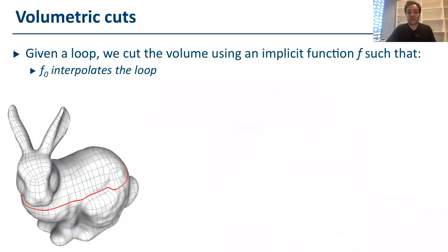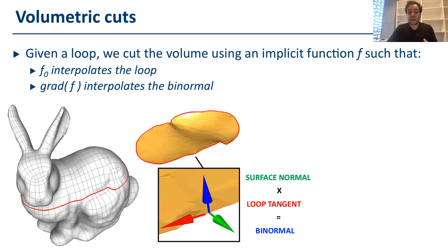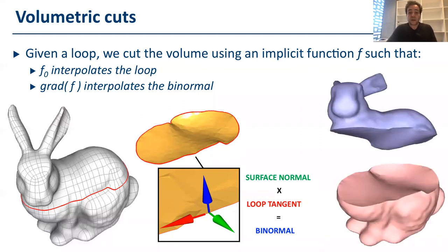So, now we have this set of loops, we actually have to define how we use them to cut our shape. Suppose we have this bunny here and we have a set of loops on its surface. Given a cutting loop, we look for a function whose zero-level set interpolates the loops and whose gradient aligns with the binormal vector, which is defined as the cross product between the surface normal and the loop tangent. Then we actually operate this cut on the volume and split the object into different pieces.